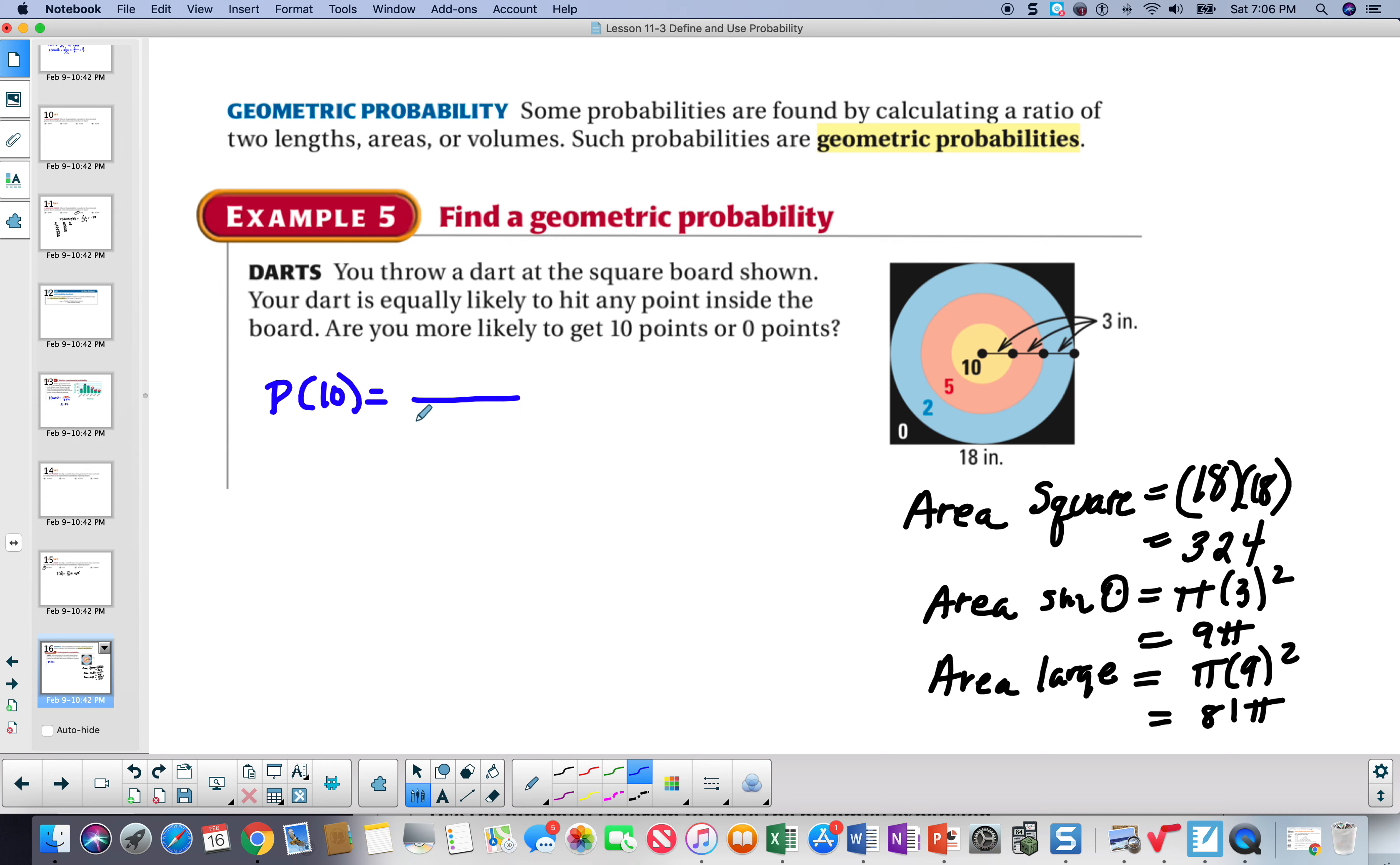That's going to be the total area. And this is going to be the favorable area. So, the total area is the area of the whole square, 18 by 18, which is 324. The favorable area is this area that gains you 10 points. It's a circle with a radius of 3. The small circle with a radius of 3 is 9 pi. And let's go ahead and put that in our calculator to figure out the answer. And I get 0.087.